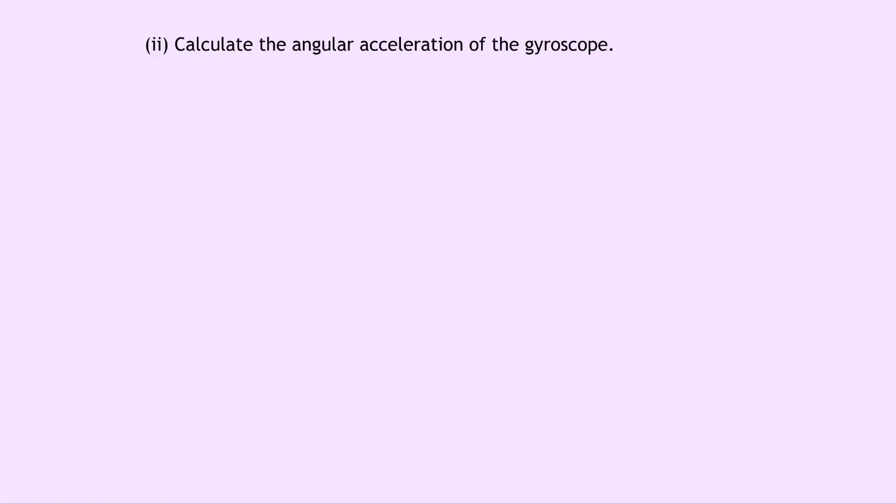Lastly, part 2 says to calculate the angular acceleration of the gyroscope. So here we're going to need to use the relationship between angular acceleration, torque and moment of inertia.